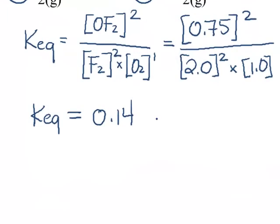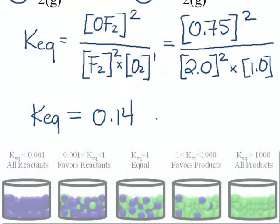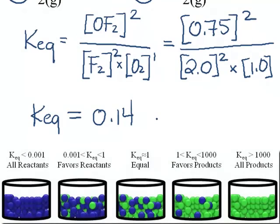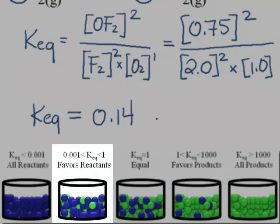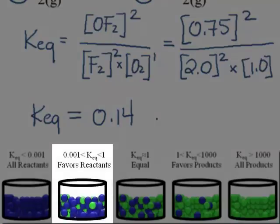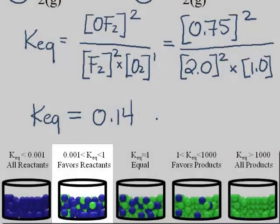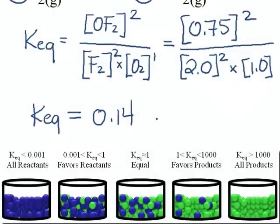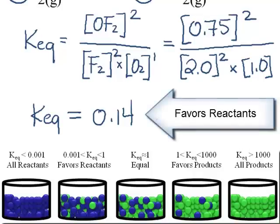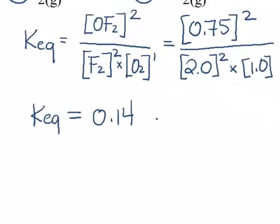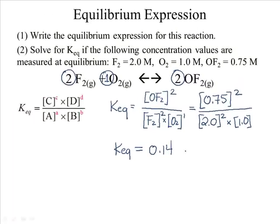Why does this matter? Notice that 0.14 is a value less than 1, but not less than one one-thousandth. So I can say that this particular equation favors reactants, although there are some products that form. That's how we use the equilibrium constant and a chemical equation to solve for the equilibrium expression or the value of the equilibrium constant.